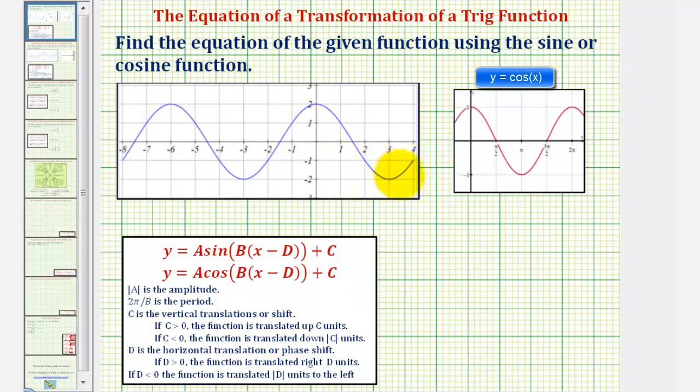We want to begin by focusing on one piece of the graph, which we'll use to build our function. Notice that at x equals zero, we have a maximum function value of positive two. And notice the basic cosine function, graphed here in red, also has a maximum function value at x equals zero. So let's focus on this piece of the graph to build our function.